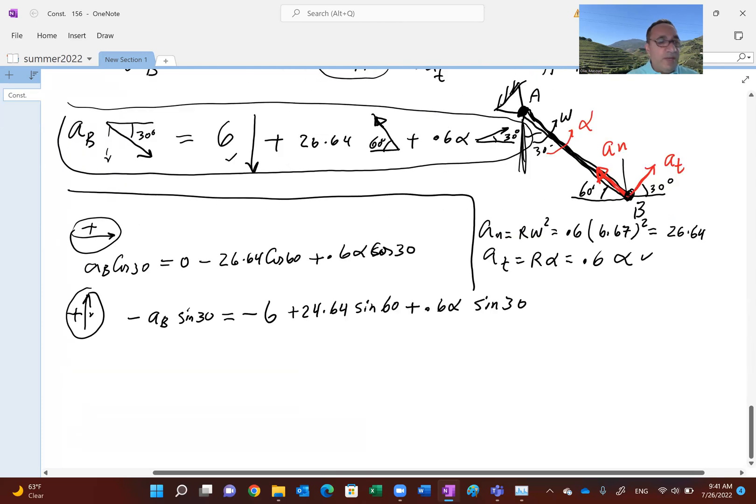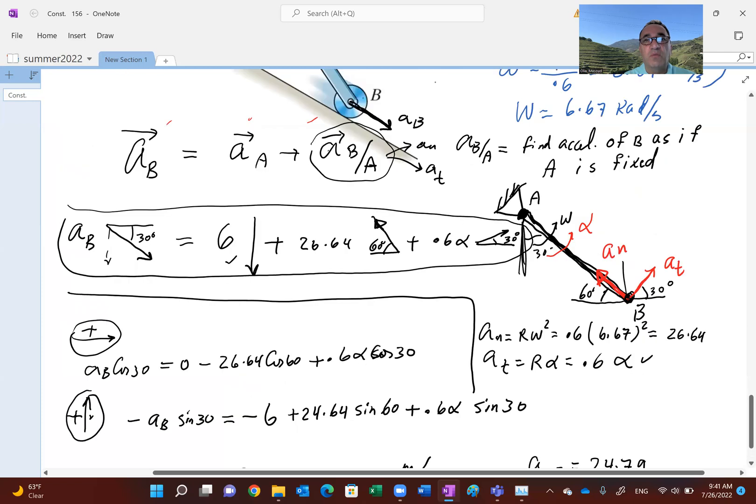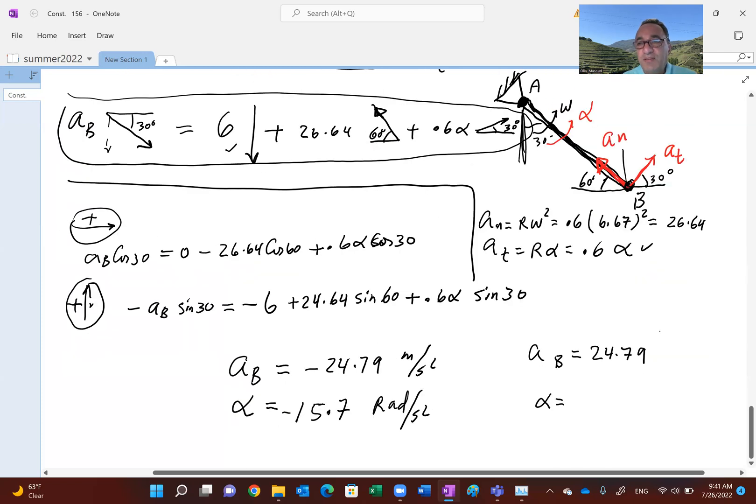Acceleration of B comes out to be negative 24.79. Give it a try, see if that's what you get. And alpha also comes out to be negative 15.7 radians per second squared. Now, the interpretation is what? Both acceleration of B and alpha of the body are decelerating. So you could write it like this, 24.79. Remember, we assume acceleration of B was downward, because you know physically B is moving down. But then it's decelerating. So its direction should be like that. Of course, at the 30 degree angle. And then alpha, and that's meters per second squared. And alpha, remember we assume this guy to be what? Counterclockwise here, you see this red? That was an assumption. We were wrong. It's going to be clockwise.